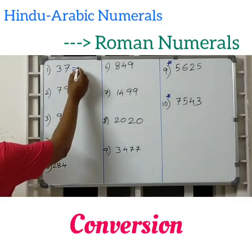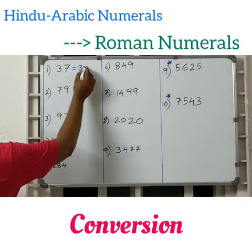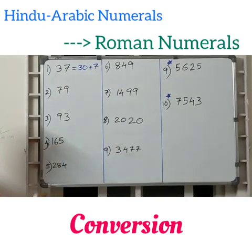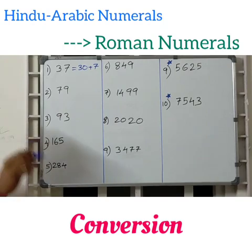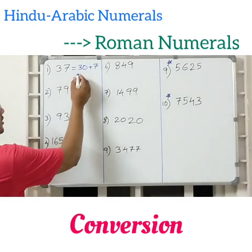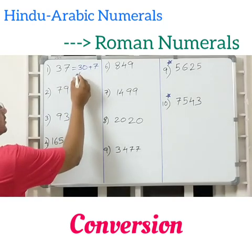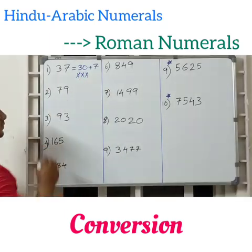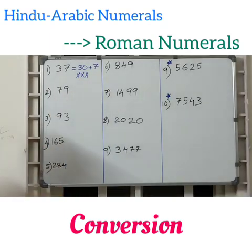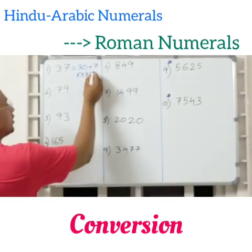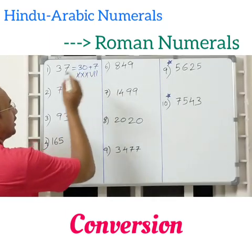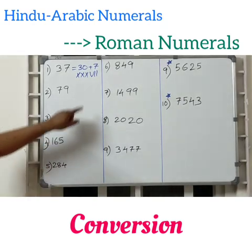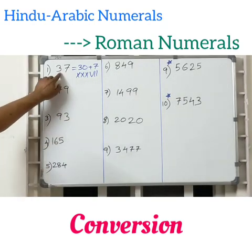So, 37. The expanded form of this is nothing but 30 plus 7. You know how to write 30 — it is nothing but XXX. And 7 is nothing but VII. So this is the Roman numeral for 37.